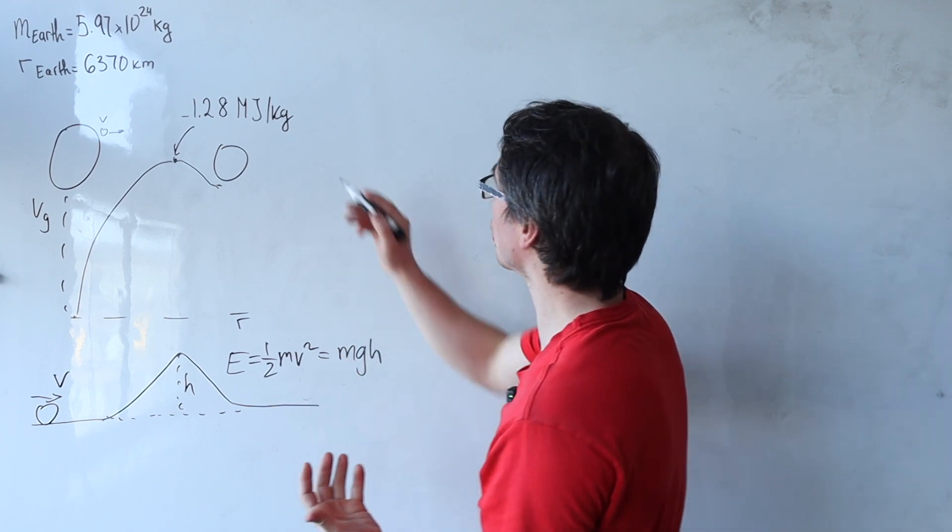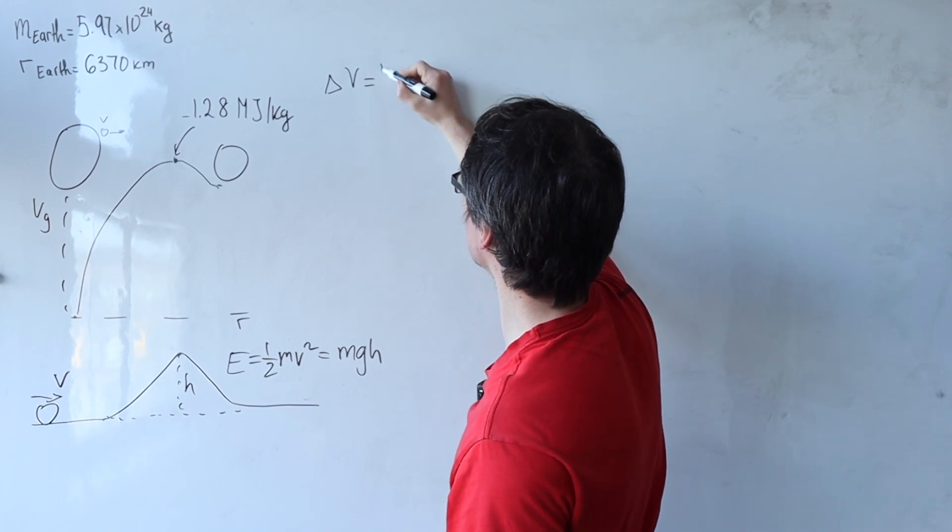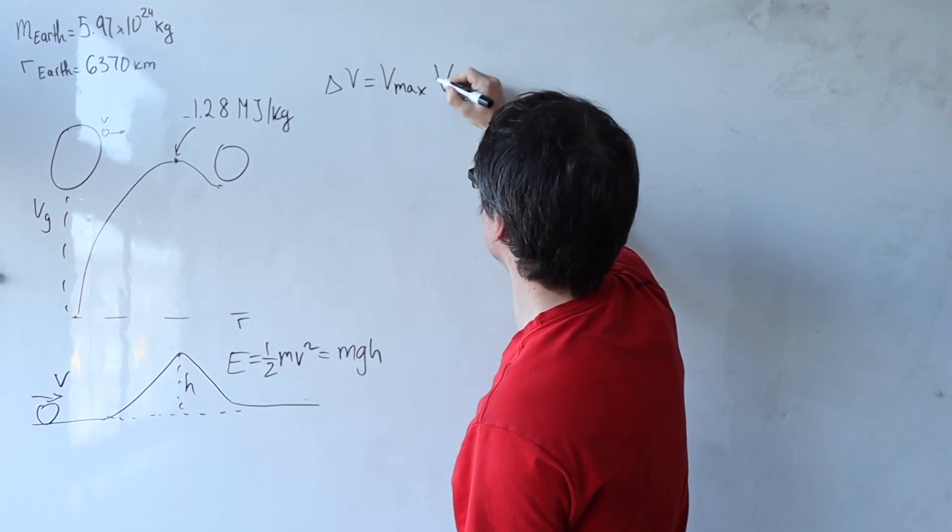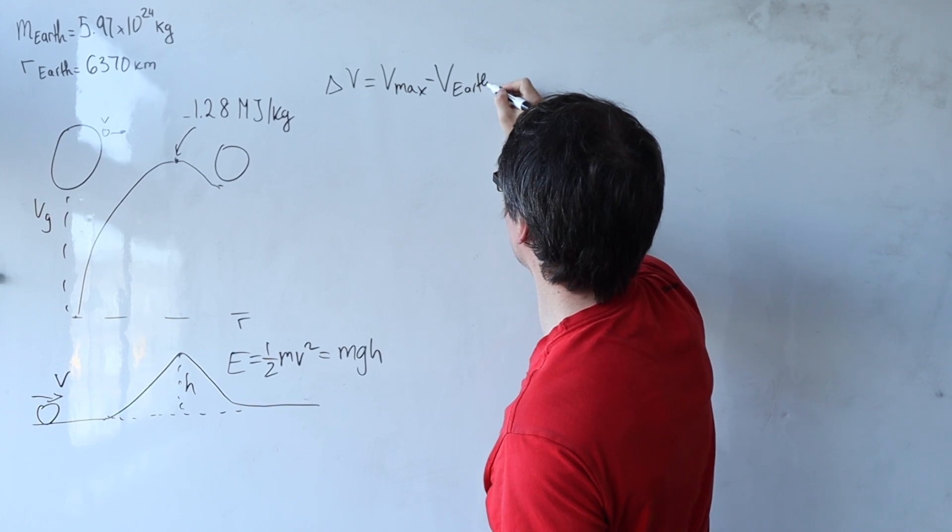let's figure out our change in gravitational potential. So this will be equal to the maximum value, which is this, take away the potential on the surface of the Earth.